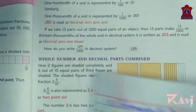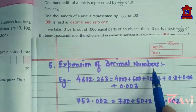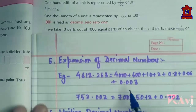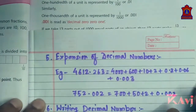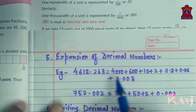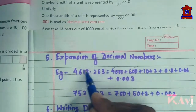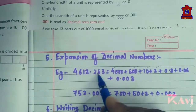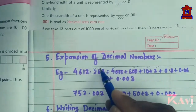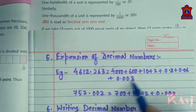Next is expansion of decimal numbers. We express decimal numbers in expanded form by writing the sum of the value of each digit in the given number. You have already learned about expanded form. Look at the number 4612.263. Expand it: 4610, then 0.2, then 0.06, then 0.003. We will be expanding the number in this manner.